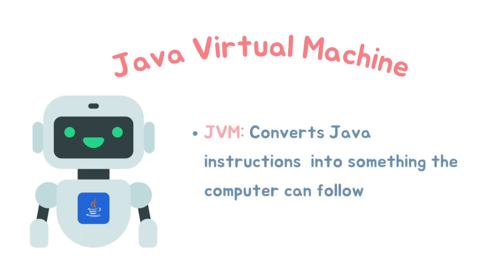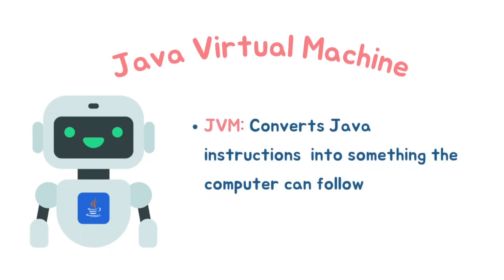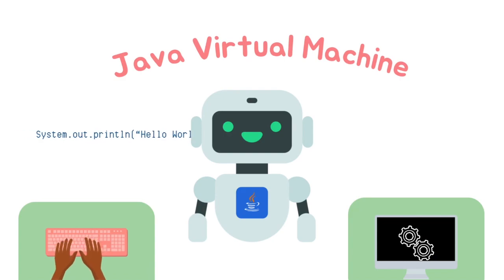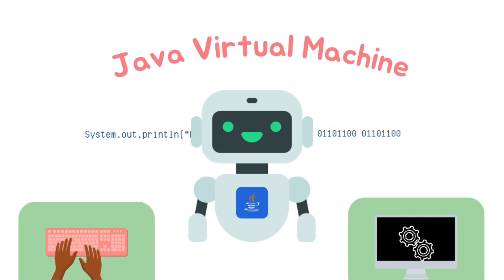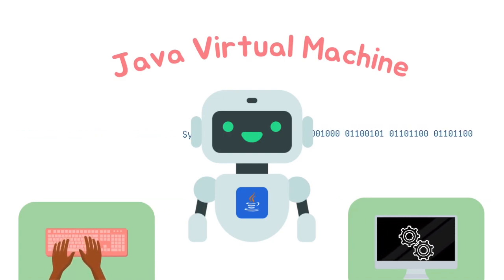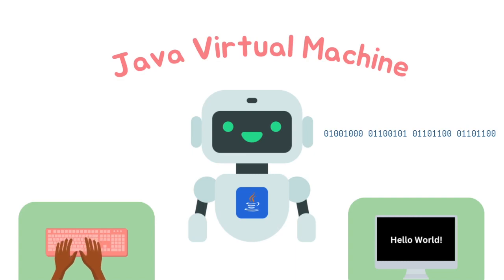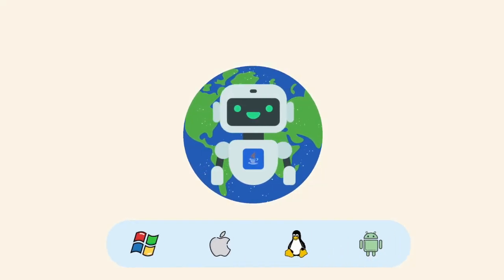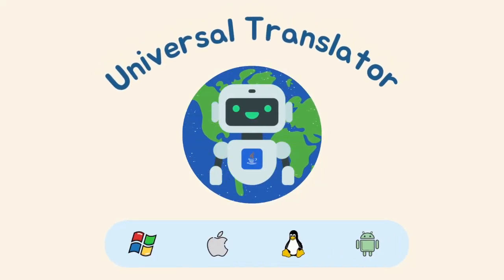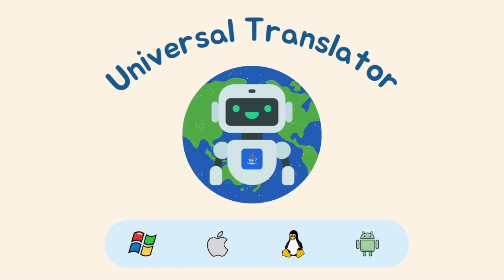This is thanks to the Java Virtual Machine. The JVM acts as a translator between the language of your Java program and the language that the computer understands. It takes your Java instructions and converts them into something the computer can follow. This conversion happens in real time when you run your Java program. The great thing about the JVM is that it's like a universal translator — it doesn't matter what kind of computer you have, as long as it has the JVM, your Java program can run on it.